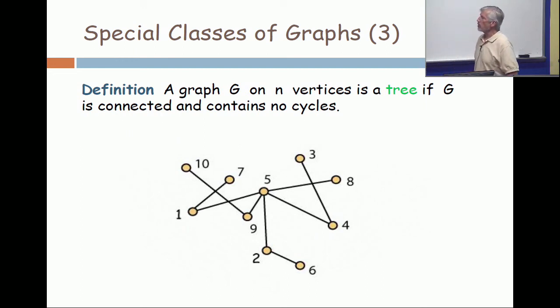Notice that if you remove vertex five from this graph, the number of components which used to be one goes up substantially. So this is an example in a tree when you have a vertex of large degree, when you remove that vertex, the number of components goes up substantially.